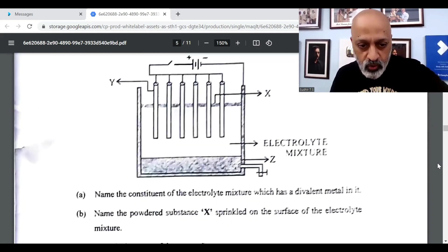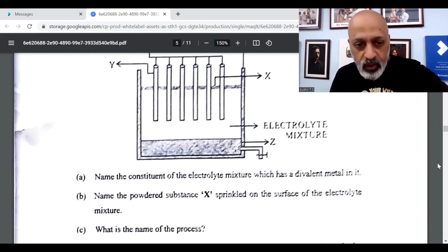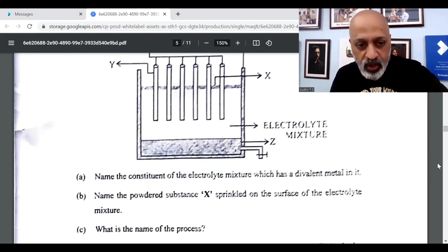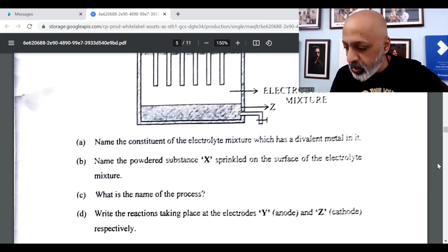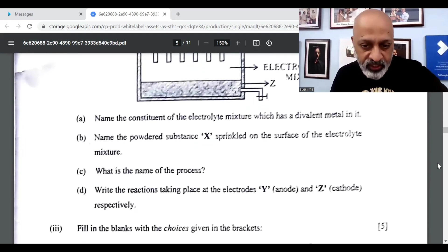Now is the diagram question. Name the constituent, Fluorspar. The second one is coke. The third one is Hall-Heroult process. And then there is a reaction.